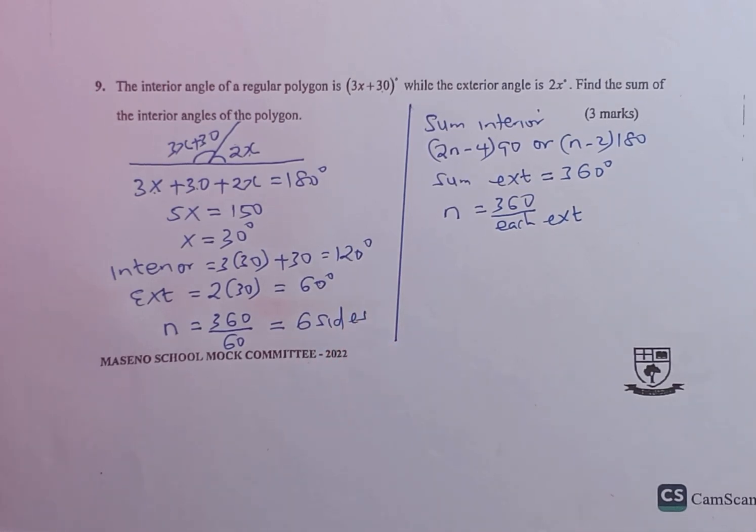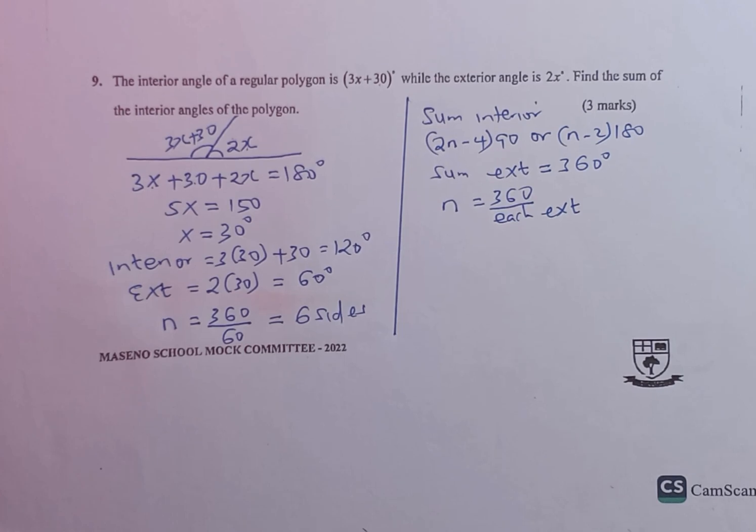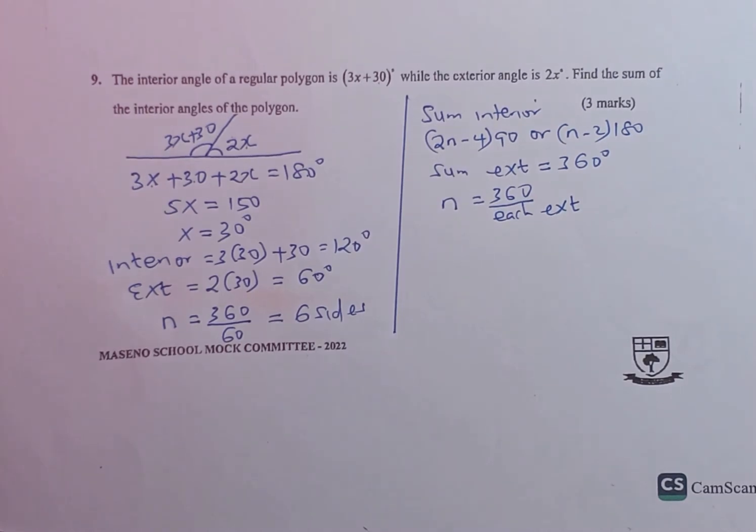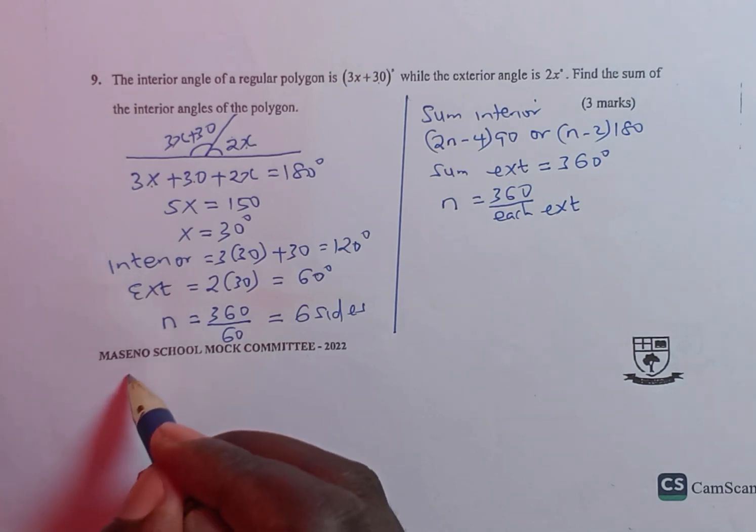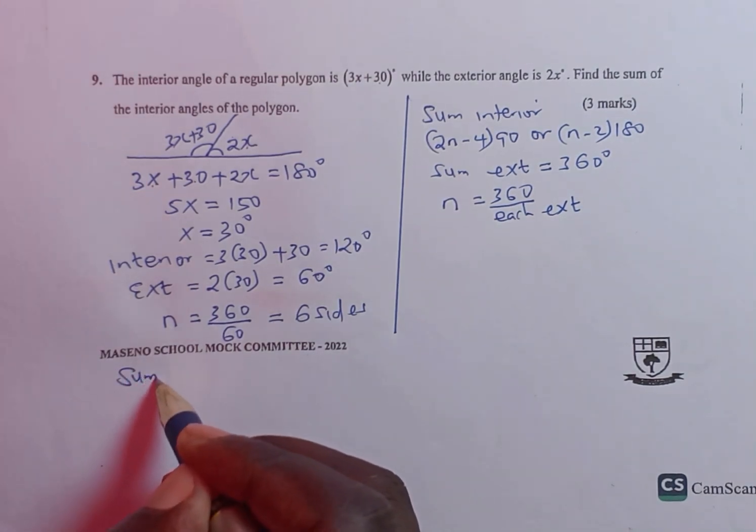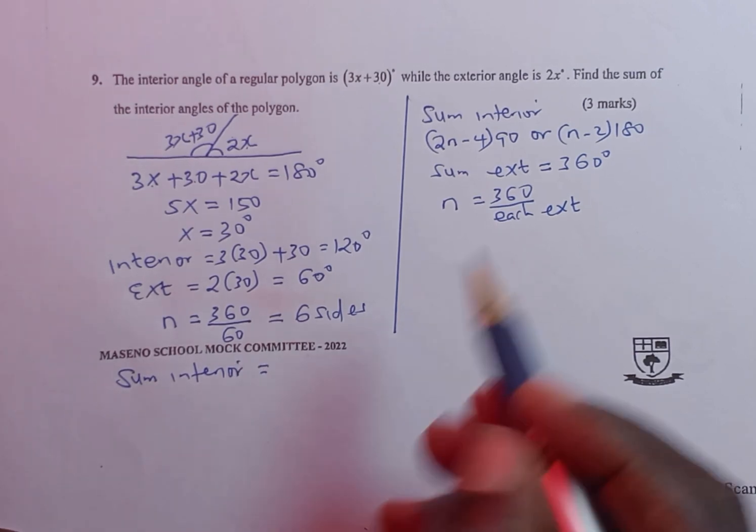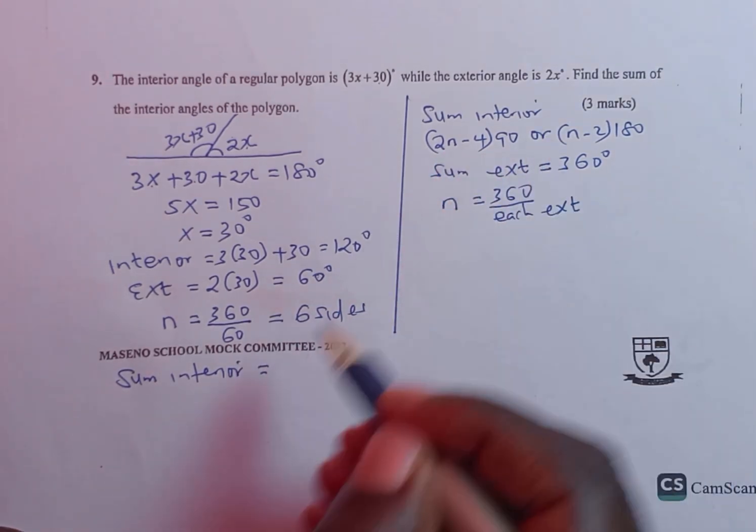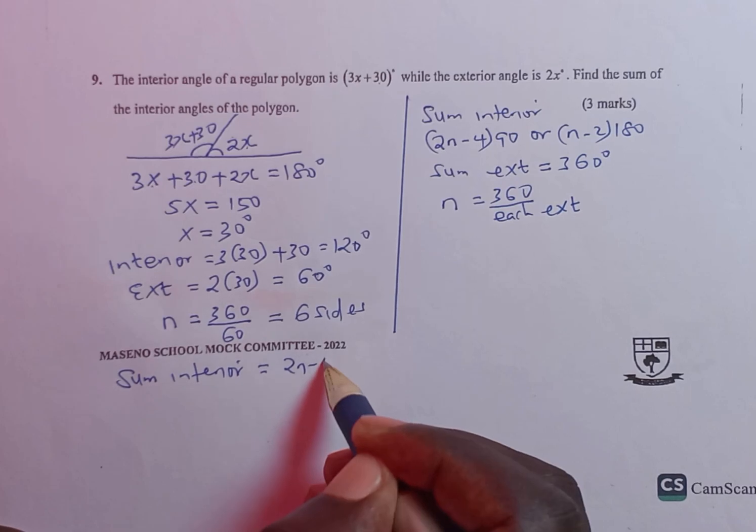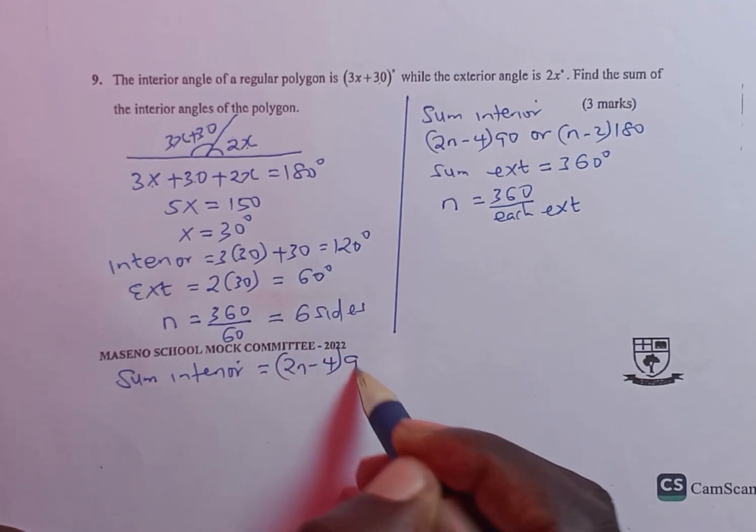Once we get the number of sides, we can now proceed and get the sum of interior angles. We use the basic formula, which is 2n minus 4 multiplied by 90.